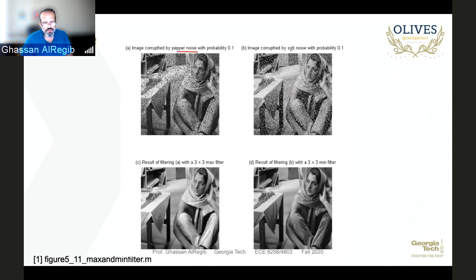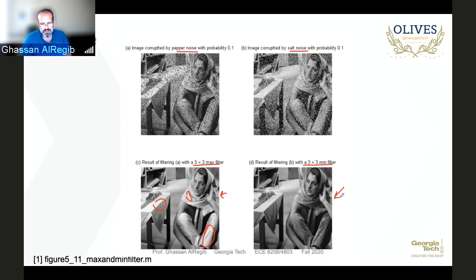With pepper noise on the left and salt noise on the right: applying a 3×3 maximum filter to the pepper noise image produces a lighter, washed-out image, which explains the white regions in the scarf, tablecloth, and pants. Applying a 3×3 minimum filter to the salt noise image removes the salt noise but introduces a darker image artifact. After these operations we apply histogram equalization or matching to improve the dynamic range of these two images.